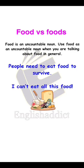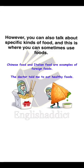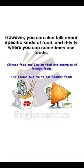However, you can also talk about specific kinds of food, and this is where you can sometimes use foods with s. متى نستخدم foods مع s؟ لما نتكلم على أنواع أطعمة محددة. For example: Chinese food and Italian food are examples of foreign foods. Also: the doctor told me to eat healthy foods. لأنه أحددت نوع الأطعمة — أنها صحية — أضفت s. تقدر تستخدم s أو ما تستخدمها، لكن في أحيان تقدر تستخدم s لما تتكلم عن نوع محدد من الأطعمة.